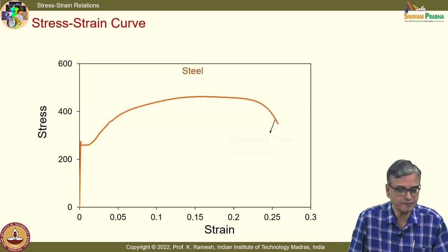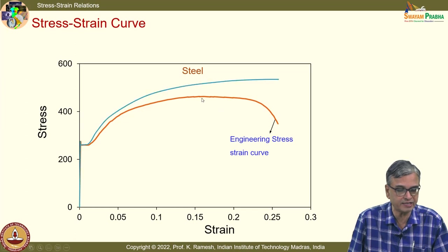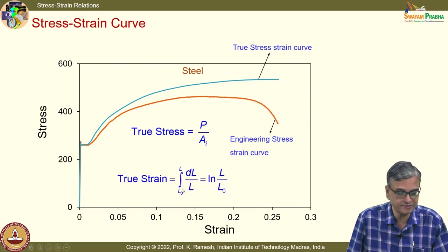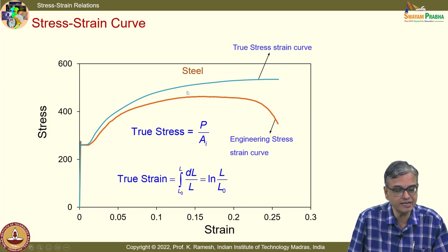We have also seen there is a drastic reduction of the cross section when the material reaches the necking point. It is better to consider the variation in cross section. If you plot the true stress as P by A_i (current area of cross section) and define strain as the integral from L_naught to L of dL/L, giving ln(L/L_naught), you have a true strain graph. Instead of drooping down after necking, this will increase until the ultimate tensile strength.